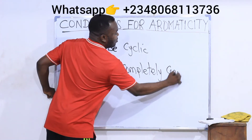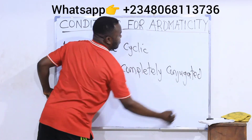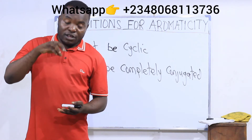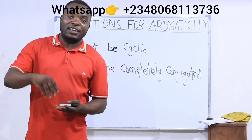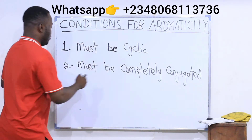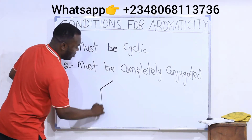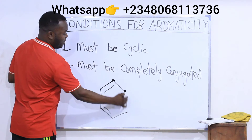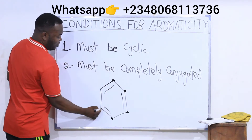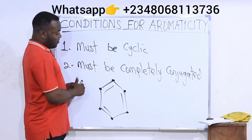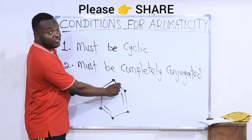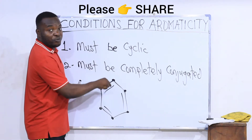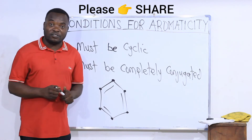Condition number two says that an aromatic compound must be completely conjugated. Being completely conjugated simply means the compound must have double bonds in alternate positions. For instance, if I have carbon here and carbon here at these junctions, you can see there is a double bond here, then a single bond, then double bond, single bond — the double bonds must be placed in alternating positions.